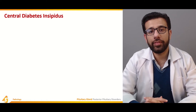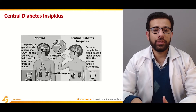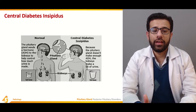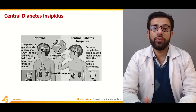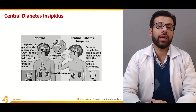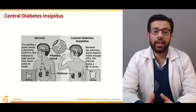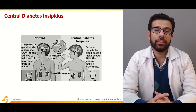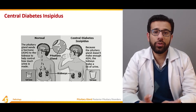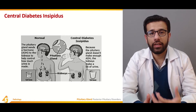An increased amount of ADH — antidiuretic hormone — results in excessive fluid retention in the body, which can cause dilutional hyponatremia. Normally, the pituitary gland sends ADH to the kidney to help control how much urine is made. When this control is not intact, it results in an increased amount of urine production.